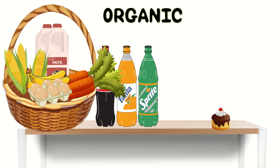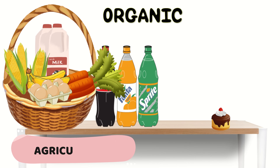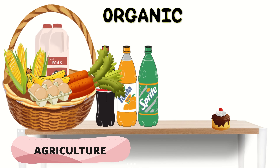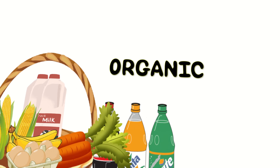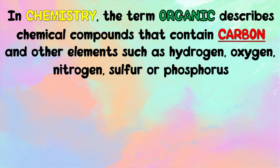You did great! In agriculture, we describe organic foods that are raised under specific conditions such as no antibiotics or no pesticides and fertilizers were used. In chemistry, the term organic describes chemical compounds that contain carbon and other elements such as hydrogen, oxygen, nitrogen, sulfur, or phosphorus.